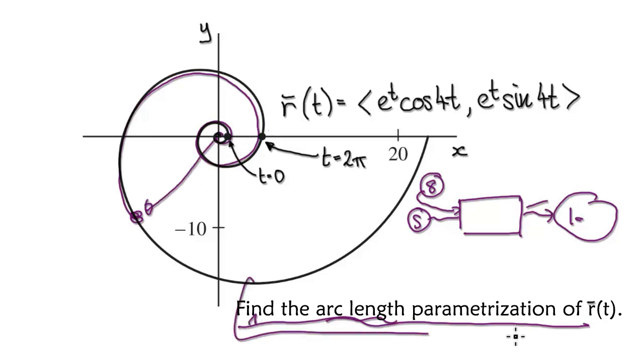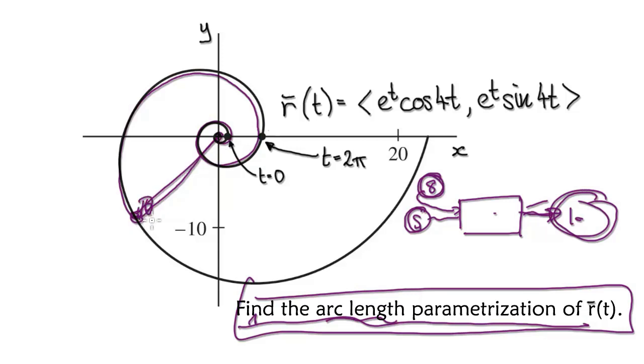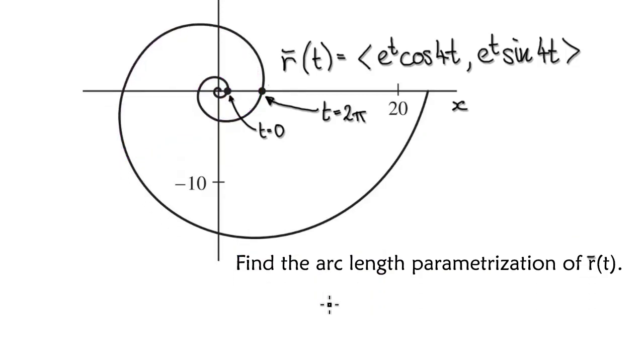So that's what this is really asking you. Create a vector function in such a way that when you feed it the arc length, it will feed you the position vector. So let's start now.